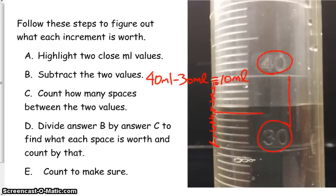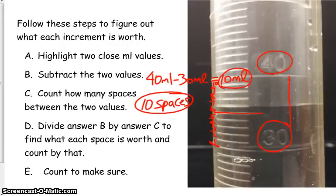Okay. So I have 10 spaces. Step D says divide answer B by answer C to find what each space is worth and count by that. So let's do our division. We have 10 milliliters over here in B and 10 spaces for C.